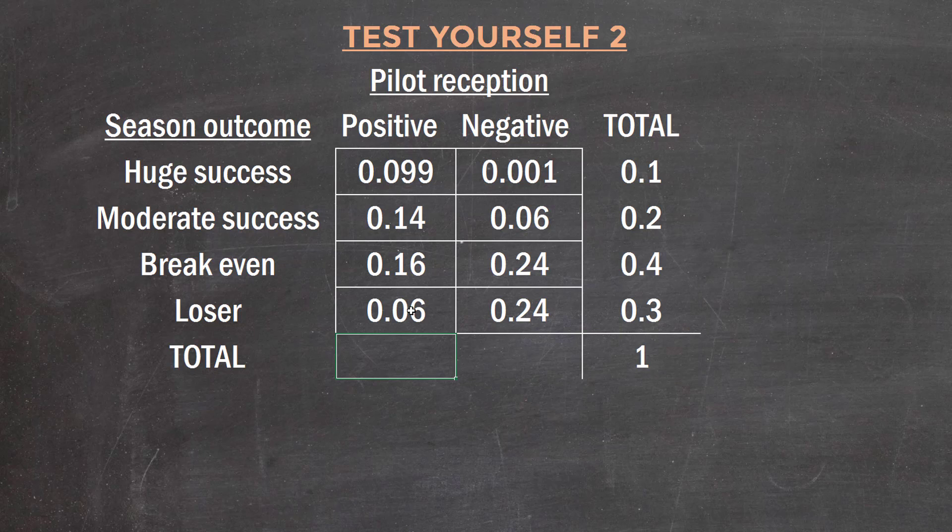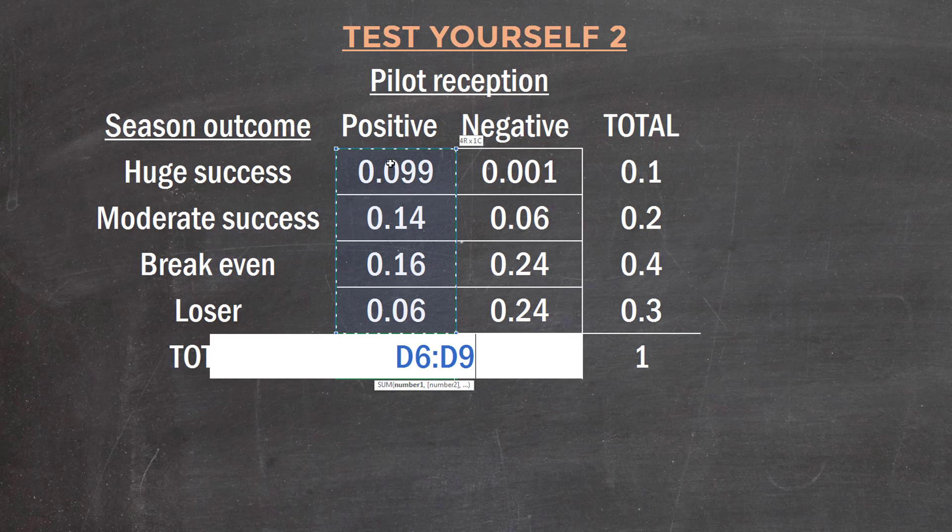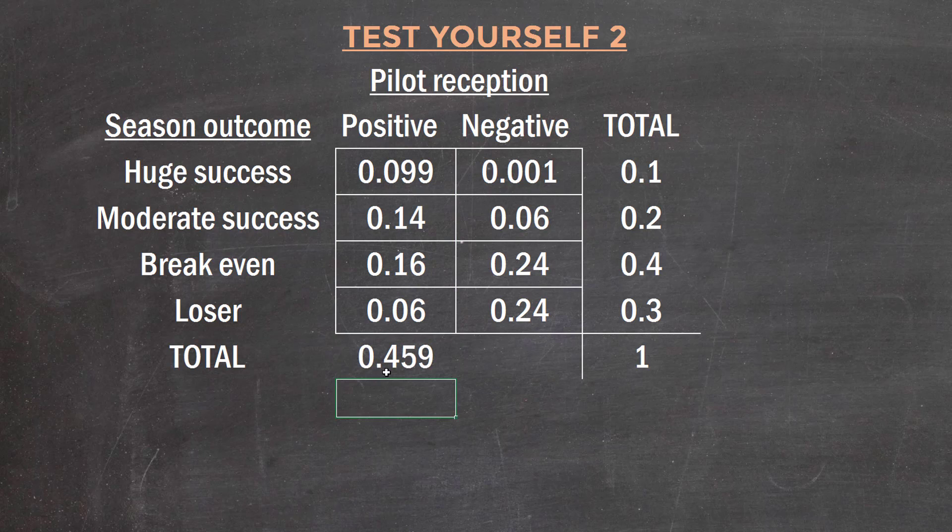So if we want, we can sum up that column. I'm just going to use a little bit of Excel help here to do so. So that's 0.459 and that's 0.541. So once again, I've got my table all sorted and I haven't even bothered reading the questions yet, because having done this table, I can now answer whatever they're going to throw at me.